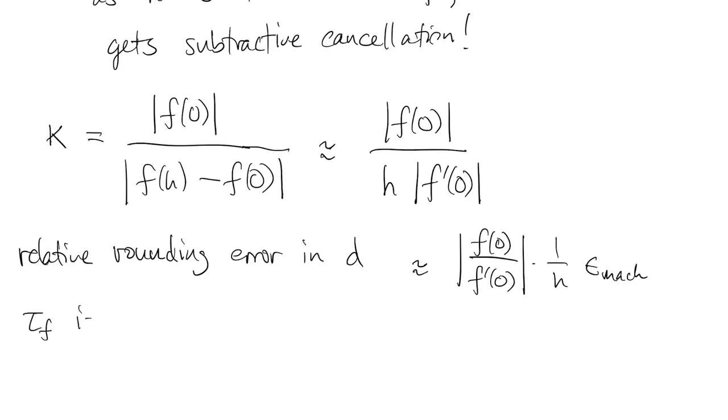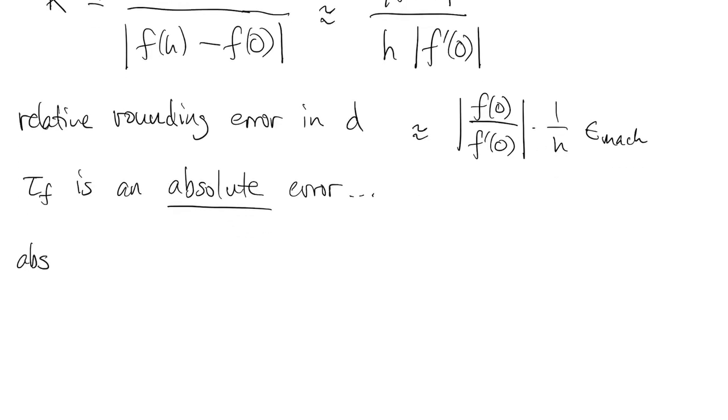Now our definition of tau uses absolute error, not relative error. So if we want to compare the rounding error to tau, we need to express rounding error in absolute terms as well.